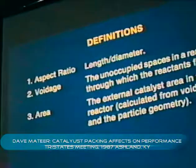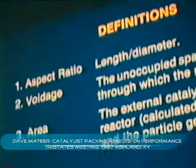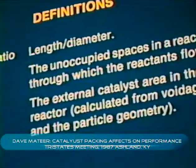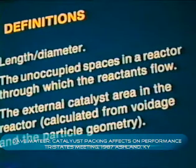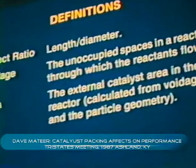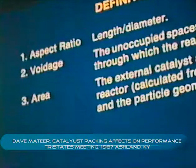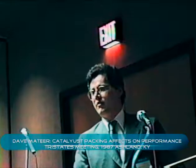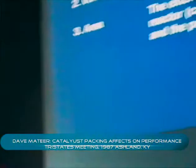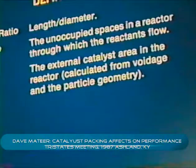The aspect ratio is the length of the particle divided by its diameter, and I'm going to demonstrate that this ratio is important in determining how much solids you get into your reactor. The voidage is the unoccupied spaces in the reactor filled with the fixed bed catalyst — these are the spaces through which the fluids flow, and consequently voidage is a very important term in pressure drop considerations. In the laboratory, pressure drop considerations are not very significant. They become very significant, however, when you're running a commercial reactor. The area is the external catalyst area in the reactor itself, a combination of the geometry of the particles and the voidage.